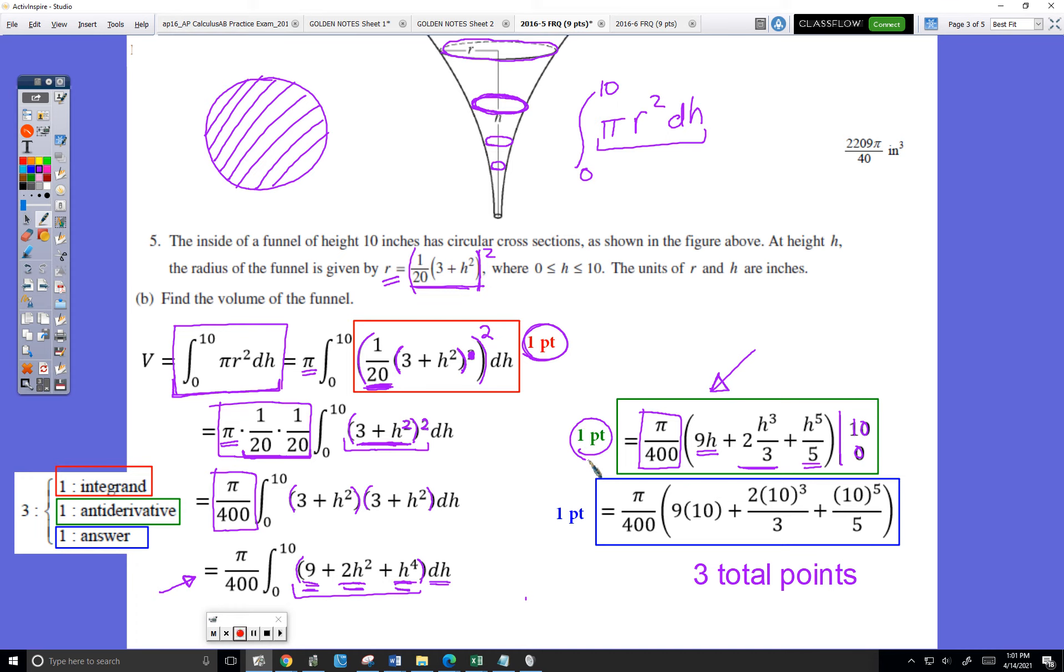So that's one more point, total of two points so far. All that's left to do is plug in the 10 and the 0. Once again, plugging in 0 would have resulted in 0, so I didn't have to write that down. I just show plugging in the 10 and I will get the third point.